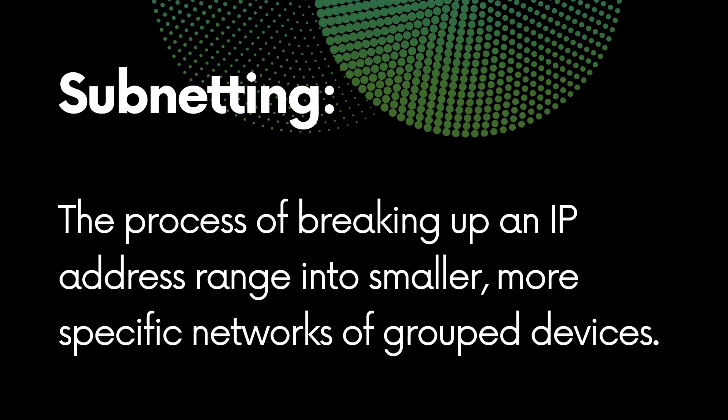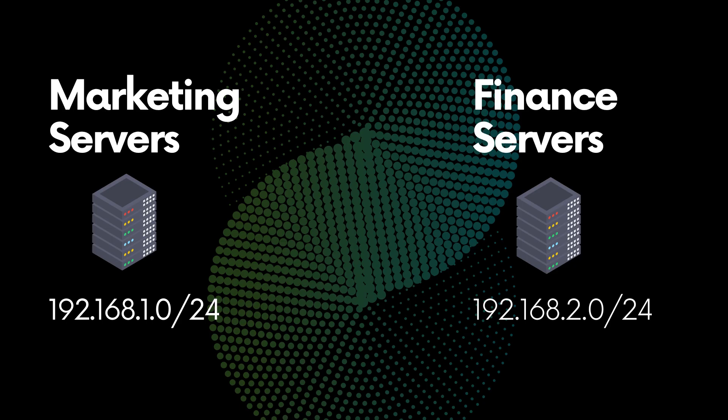Subnetting is the process of dividing a large IP address block into smaller, more manageable, or more usable segments for different device groupings. For instance, a company might group servers for the finance department separately from those for marketing, and they would assign them distinct IP address ranges. So let's imagine a company with 100 new IP addresses — they could allocate 50 to finance and 50 to marketing, effectively subnetting the provided IP range or IP block.